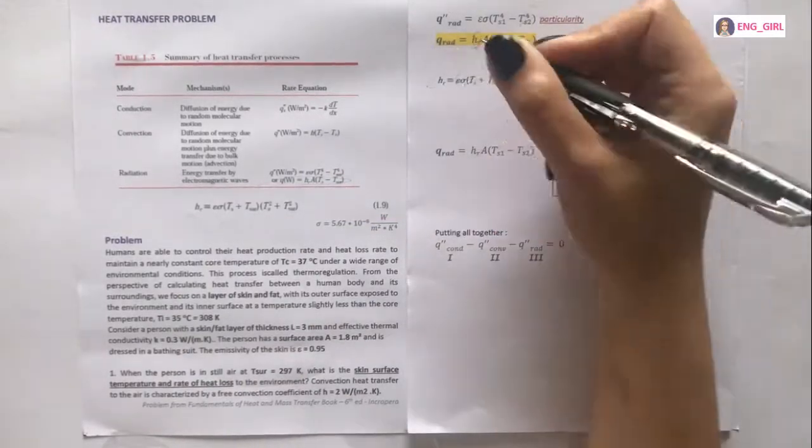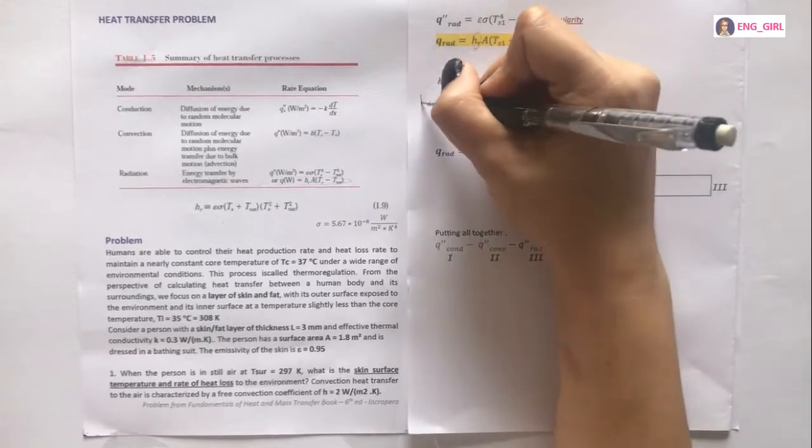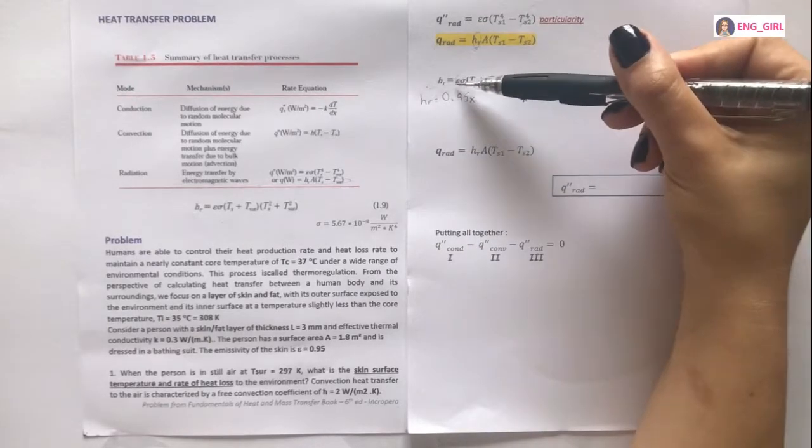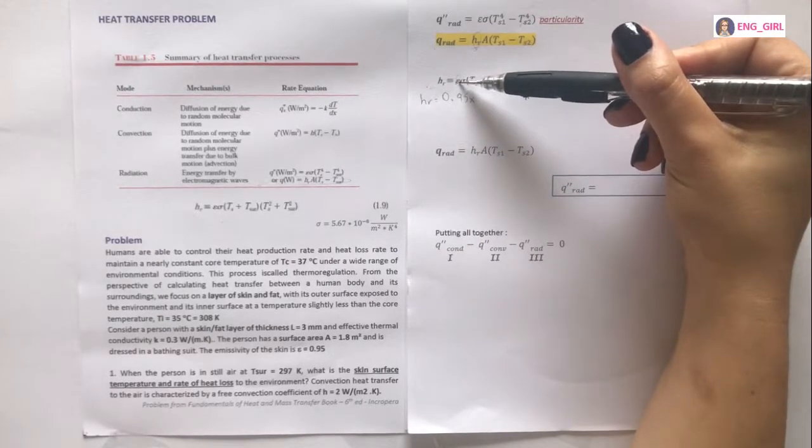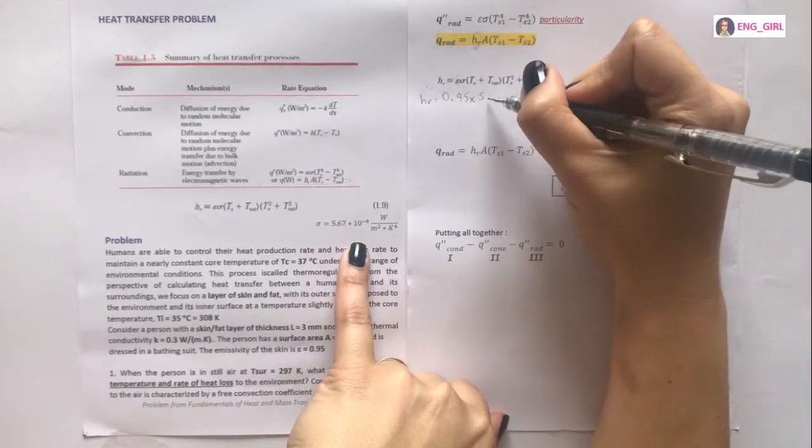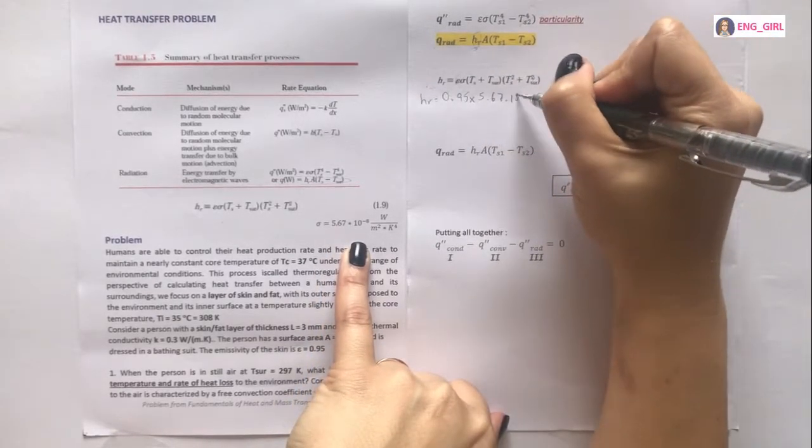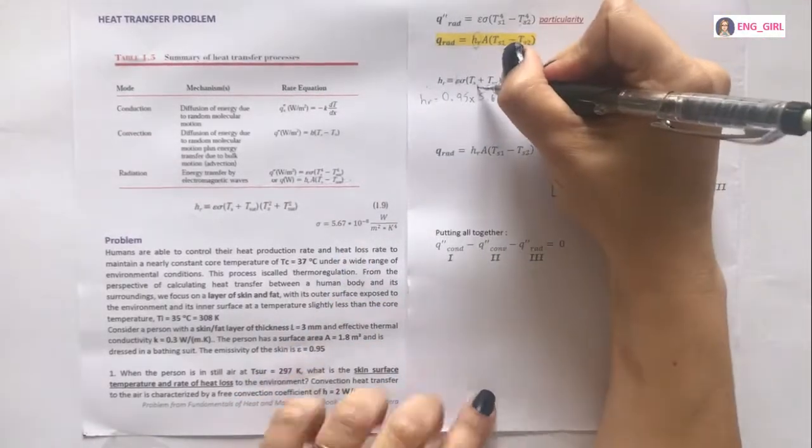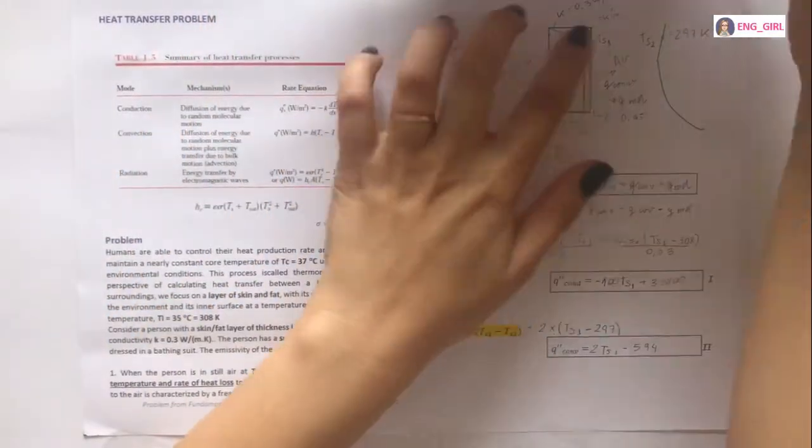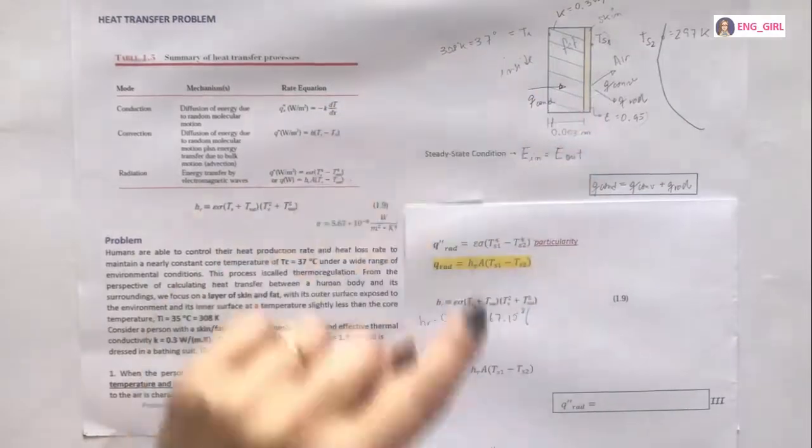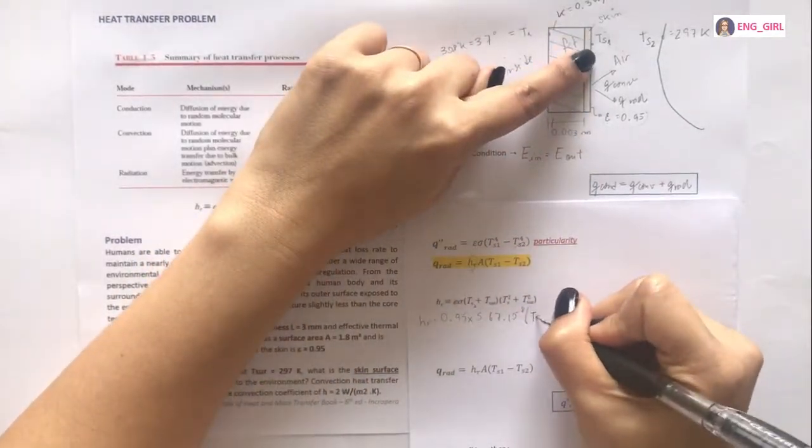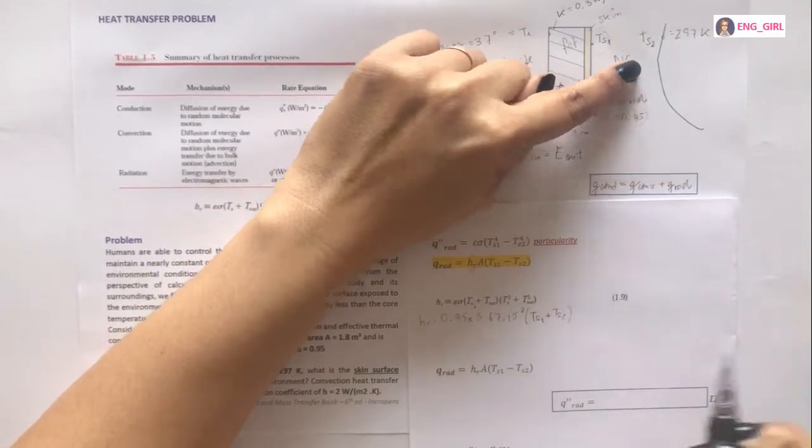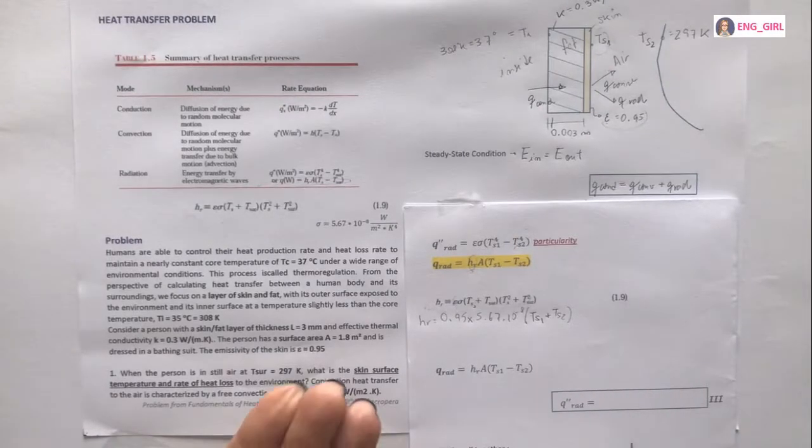We have to use this equation. The emissivity at the exercise, 0.95 multiplied by the Stefan Boltzmann constant. The number is here, multiplied by TS1 plus TS surface 2. Here we have another particularity.